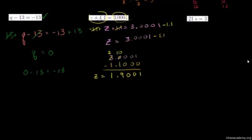Let's verify: what is z plus 1.1? That's 1.9001 plus 1.1. Adding: 1, 0, 0, 9 plus 1 is 10, carry the 1, and 1 plus 1 plus 1 is 3. We get 3.0001. That's also a good review of adding and subtracting decimals.